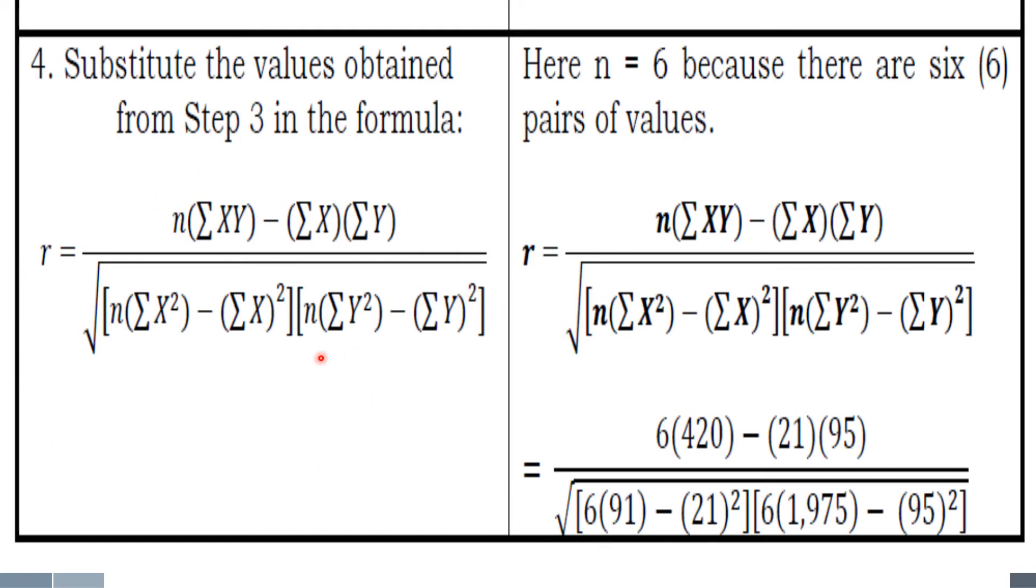Remember, we have here the formula and then replacing the values, we're replacing the variables by their values. For n, we have 6, because there are 6 respondents. Summation of xy is 420. Summation of x is 21. Summation of y is 95. Summation of x squared is 91. Summation of x is 21. Summation of y squared is 1,975. Summation of y is 95.